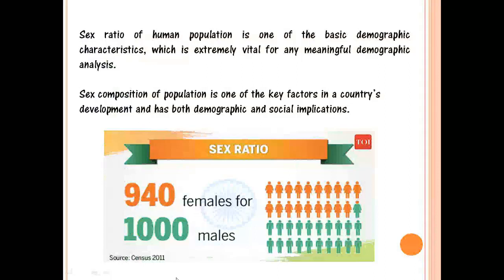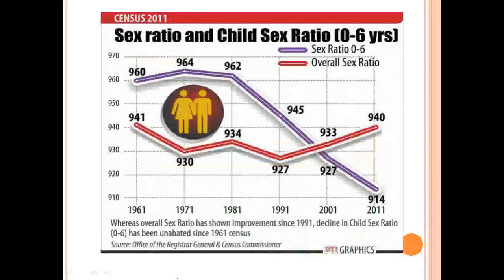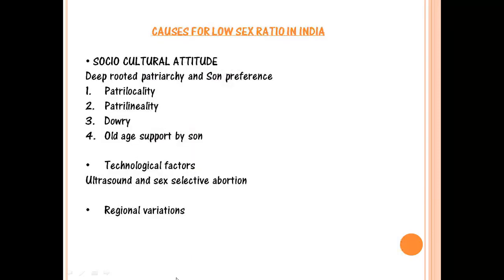Sex ratio is basically the number of females per thousand males. For India it is around 940 females per thousand males. The sex composition of the population is a very important key factor when talking about a country's development, and it has both demographic and social implications. There is a graph depicting the overall sex ratio of 940 as well as the child sex ratio — these numbers are very important, please learn them by heart.